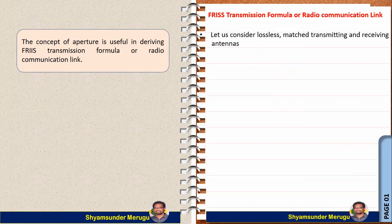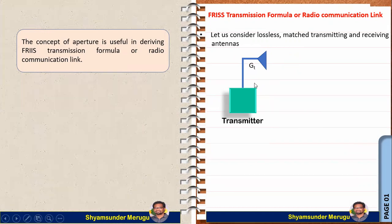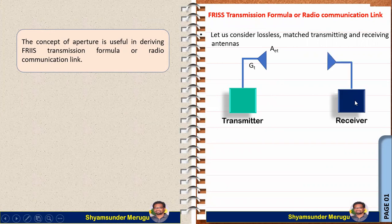Let us consider lossless matched transmitting and receiving antennas. The transmitting antenna has gain GT and effective aperture AET. The receiving antenna has gain GR and effective aperture AER. These two antennas are separated by a distance R, and the signal is transmitted and received between the transmitter and receiver sections.